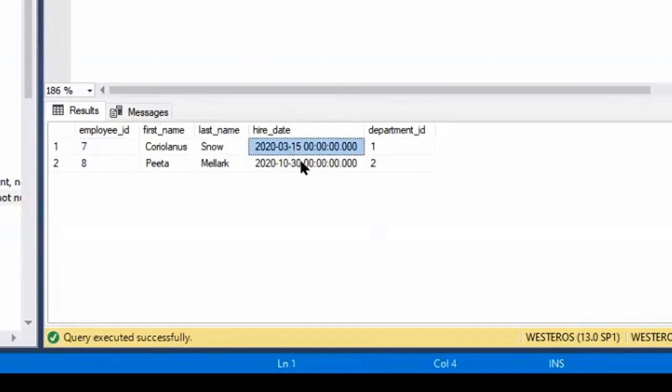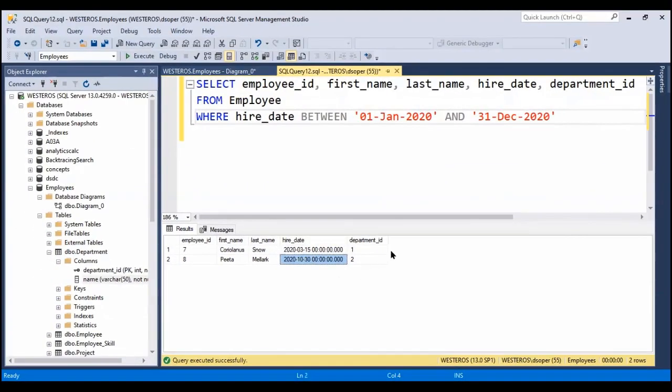So our only results should be those who were hired during the year 2020. Now, if we run this and look at the results, we can see that indeed those who were returned were hired during 2020. So that's great. This person was hired in March, this person was hired in October, but 2020.